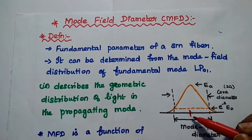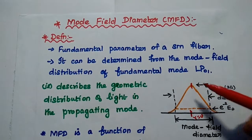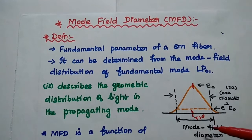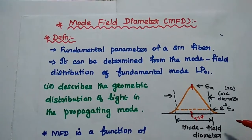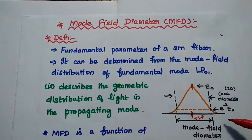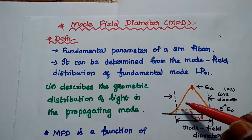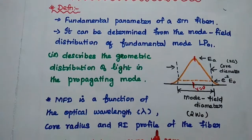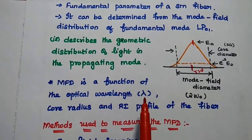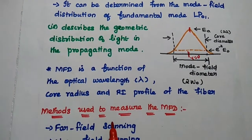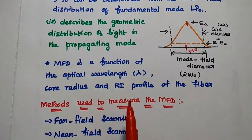At the center point, the core axis R = 0, there is maximum optical power. Based on the width of the core, it can be reduced to the level e^(−2) × E(R). The mode field diameter gives the 1/e² width of the optical power within the core diameter. MFD describes the geometric distribution of light propagation in the single mode fiber. It is a function of optical wavelength, core radius, and the refractive index profile of the fiber.